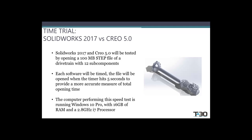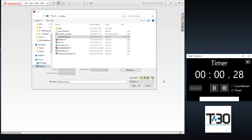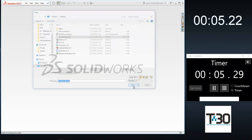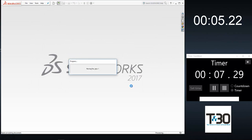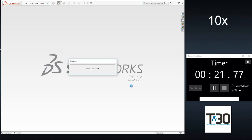In this video, we will be comparing how long it takes to open a STEP assembly in SOLIDWORKS 2017 and Creo 5.0. The STEP assembly used is a drivetrain taken from a larger vehicle assembly. It is 100 megabytes and consists of 12 sub-components. The computer performing this test is running Windows 10 Pro with 16 gigs of RAM and a 2.8 gigahertz processor. Each software will open this assembly and will be timed during the process. We will start with SOLIDWORKS.